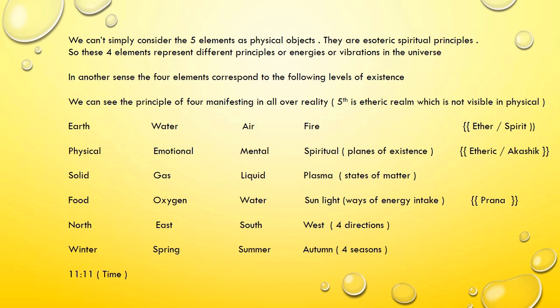Prana is breathing in the source field, or taking energy directly from the etheric realm. We also see the principle of four manifesting in directions — north, east, south, west — and in the four seasons: winter, spring, summer, autumn.